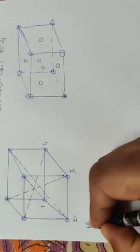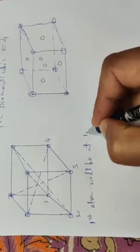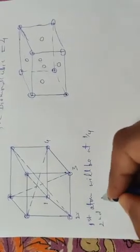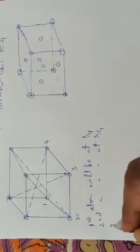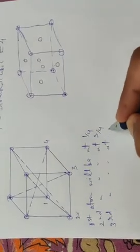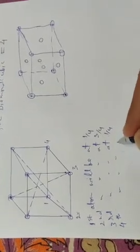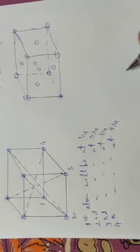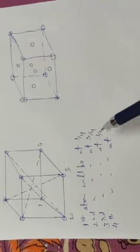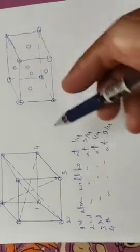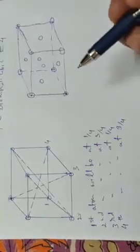The first atom will be at the one-fourth position, the second atom will be at the three-fourth position, the third atom will be at the one-fourth position, and the fourth atom will be at the three-fourth position. The second atom is at the opposite position — at the three-fourth position.